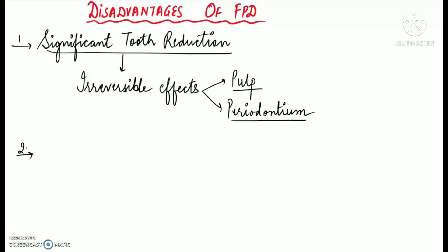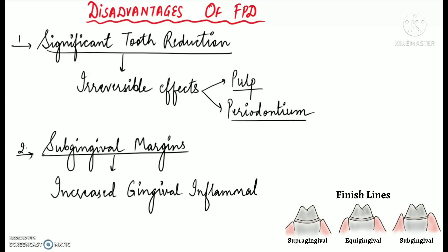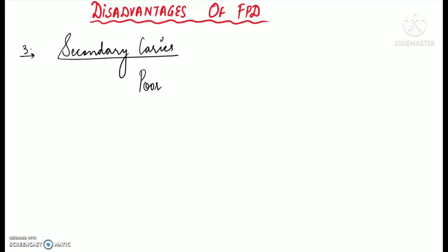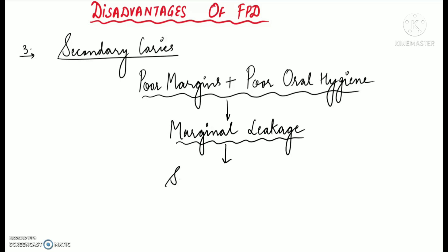Another disadvantage is that sub-gingival margins are required in the anterior region of the mouth to fulfill aesthetic demands, but these are often associated with increased gingival inflammation. Additionally, secondary caries can occur under the margins of the retainers; poor margins of the restoration or poor oral hygiene maintenance by the patient can result in marginal leakage, leading to secondary caries.